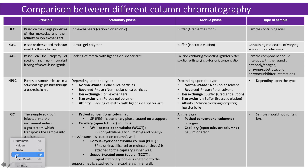The next slide shows a comparison between different column chromatographies. First, ion exchange chromatography is based on the principle of charge properties of the molecules and their affinity to ion exchangers. The stationary phase used for ion exchange chromatography are ion exchangers, which may be cationic or anionic depending upon the type of molecule to be separated. The mobile phase includes a buffer solution with gradient elution — a buffer of increasing salt concentration is used step by step.